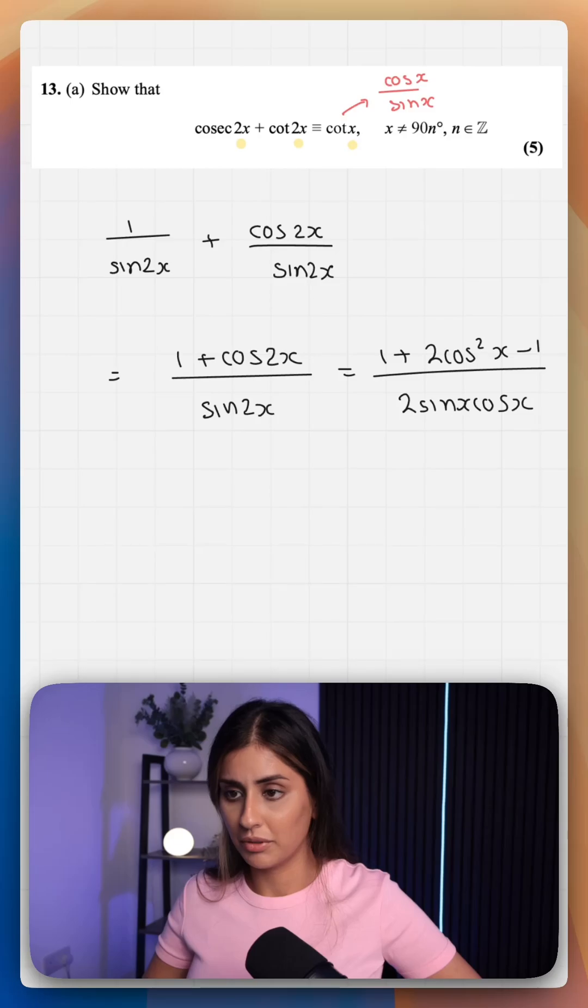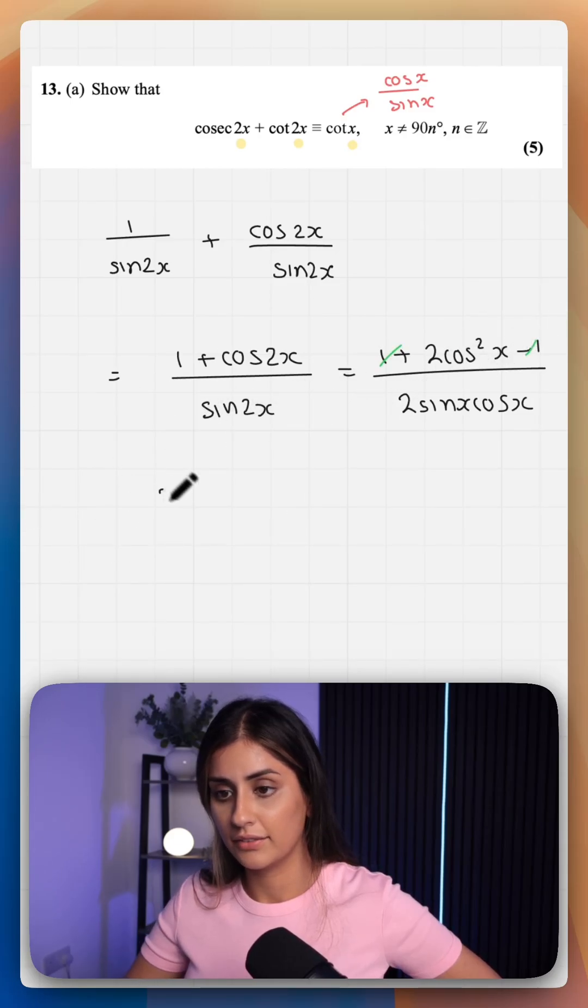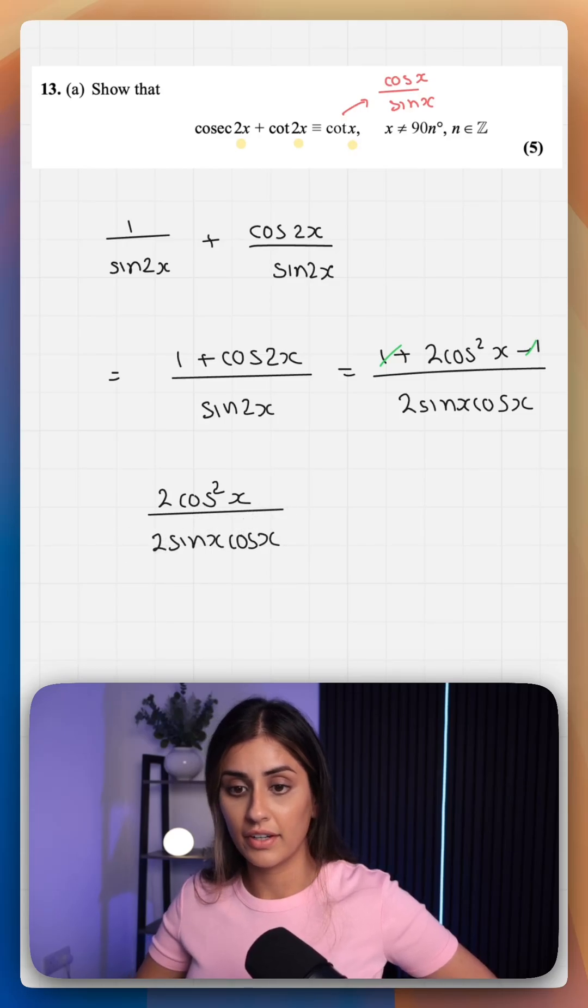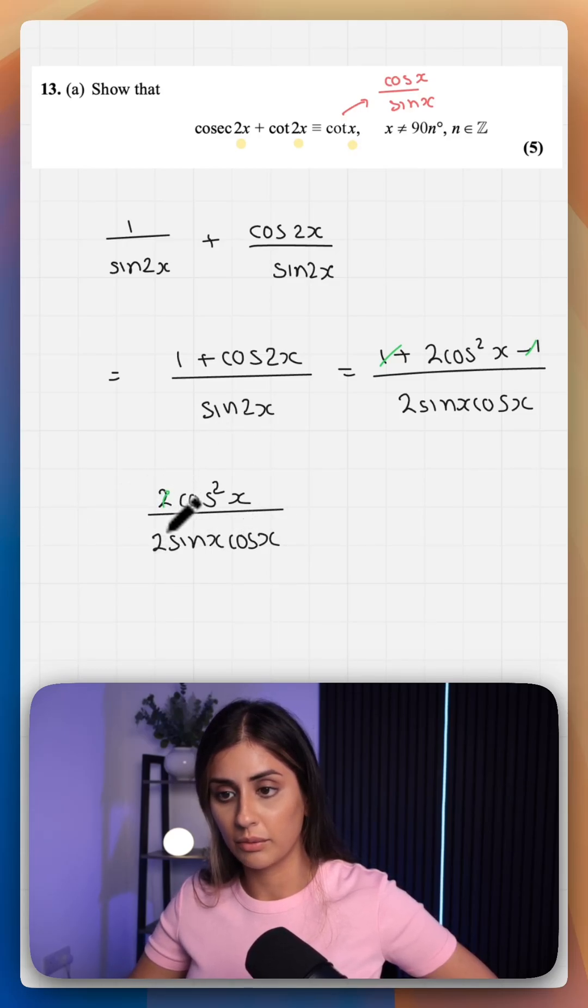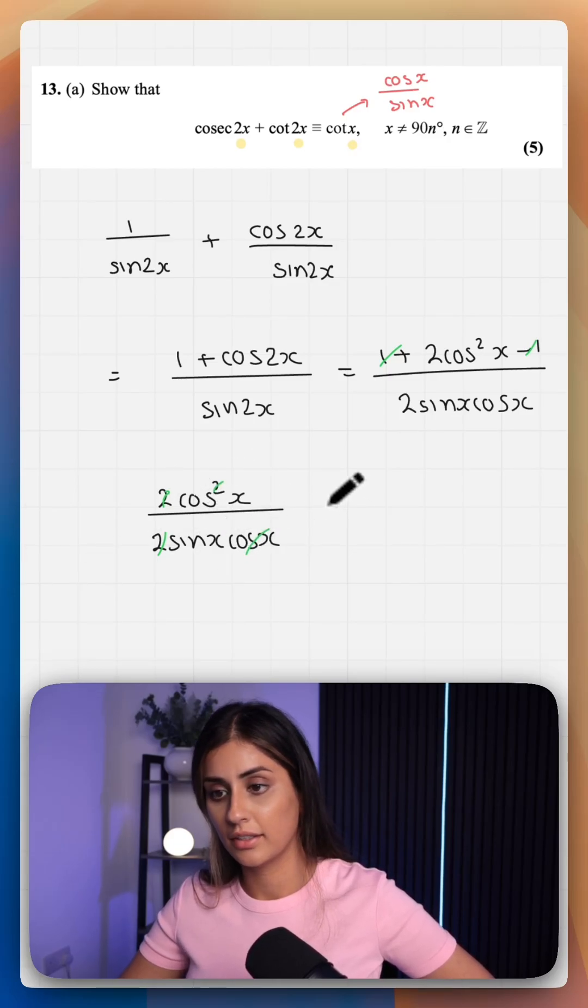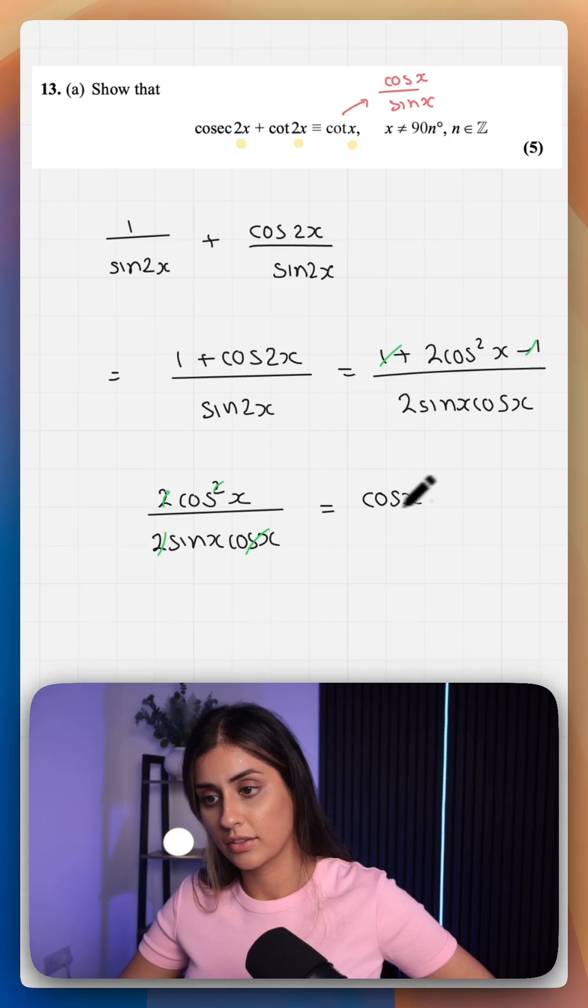Okay let's simplify. This and this will cancel out. That leaves us with 2 cos squared x over 2 sine x cos x. We can further simplify this so the 2's will cancel out. 1 cos on the denominator cancels out with 1 cos on the numerator. This leaves us with cos x over sine x, which is cot x.